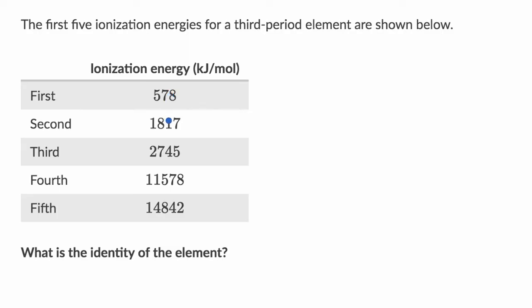And so for the first, second, and third, you do have an increase in ionization energy. But when you go to the fourth, the energy required to remove those is way higher. So to me, these look like you're removing valence electrons.